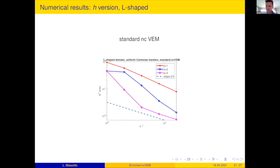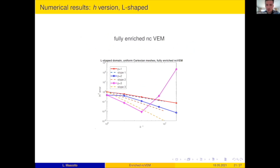Standard non-conforming VEM goes as expected. Algebraic convergence. I'm on an L-shaped domain. The smoothness of the function is less than H^(5/3). So the rate of convergence cannot be better than two thirds. And this is what you observe. P=1, 2, 3. Fair enough. Expected.